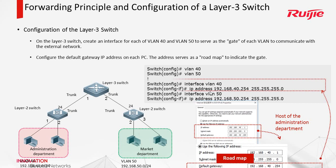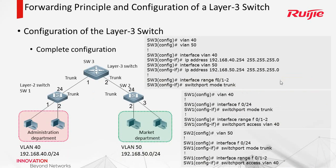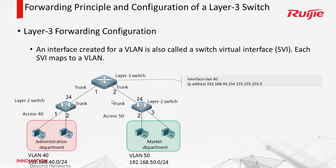We call it a root map — this is the gateway. This is the complete configuration. Besides configuring the VLAN and interface VLAN, don't forget to configure the interface mode. This switch needs to forward multiple VLANs, so these two interfaces should be configured in trunk mode. For the layer 2 switch, just configure the VLAN and change the mode: access here, trunk here. In the layer 3 switch, we create the interface VLAN. In fact, it has a name called Switch Virtual Interface, or SVI.